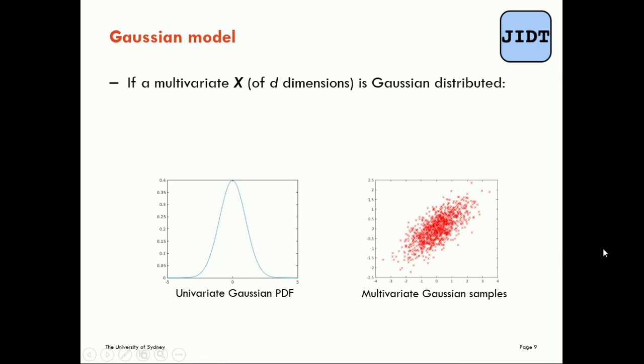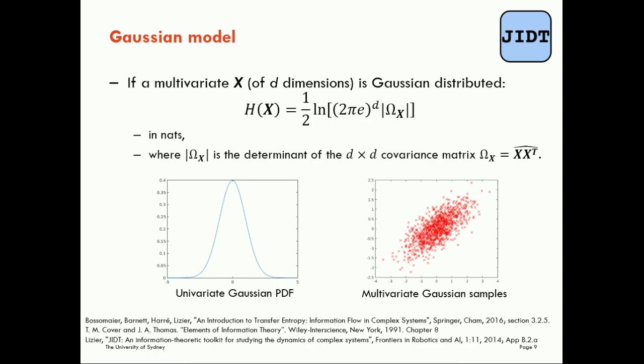So when we model our data in this way as having a Gaussian distribution we have the analytic result that the entropy of this multivariate has this specific analytic form. This is given in nats. Here Ω_X is the covariance matrix of the multivariate and we take the determinant of that. It's a simple analytic distribution - all we're going to do is compute the covariance between our variables and we can straightaway compute the entropy.